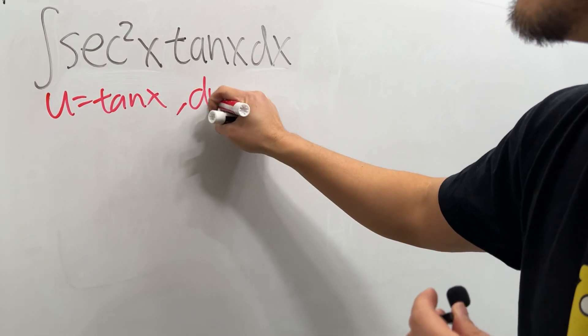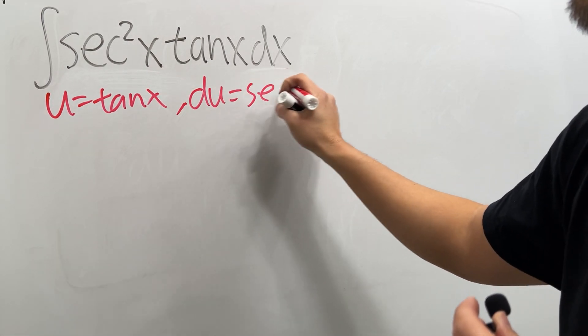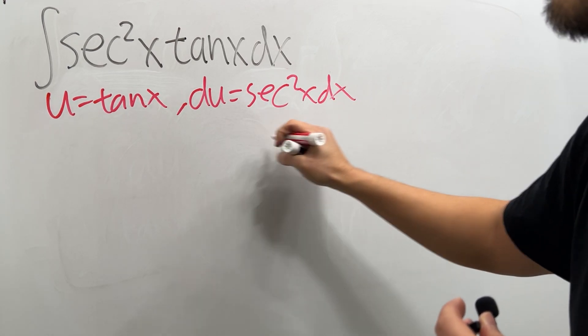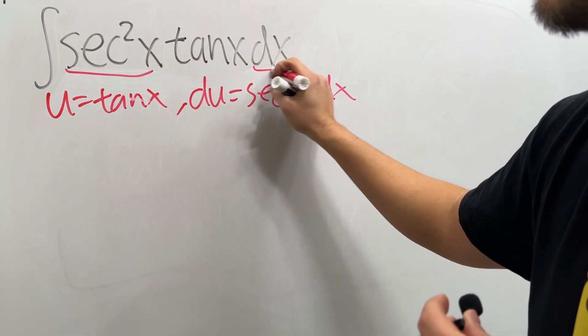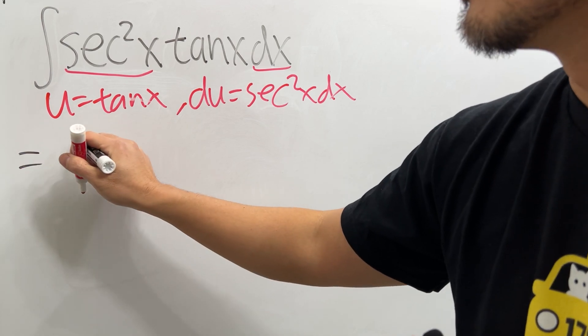which is that u equal to tangent x, and you see du is just going to be the derivative, which is secant squared x dx, and we happen to have secant squared x times dx right here. So take this integral to the u world,